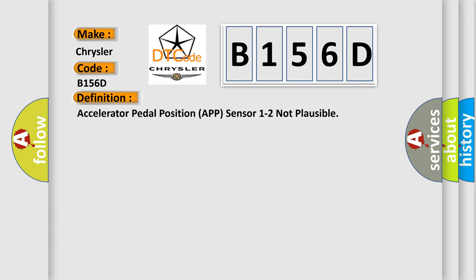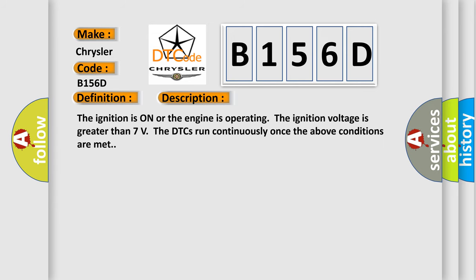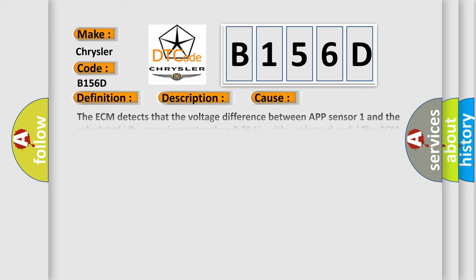And now this is a short description of this DTC code. The ignition is on or the engine is operating, the ignition voltage is greater than 7 volts. The DTCs run continuously once the above conditions are met. This diagnostic error occurs most often in these cases: